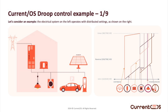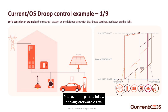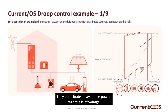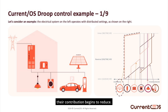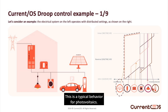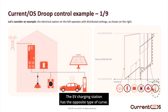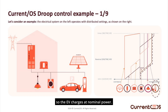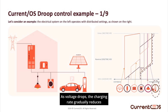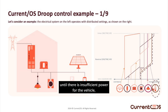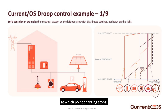Photovoltaic panels follow a straightforward curve. They contribute all available power regardless of voltage. However, when the voltage reaches a high threshold, their contribution begins to reduce — this is typical behavior for photovoltaics. The EV charging station has the opposite type of curve. High voltage signals that sufficient power is available, so the EV charges at nominal power. As voltage drops, the charging rate gradually reduces until there is insufficient power for the vehicle, at which point charging stops.